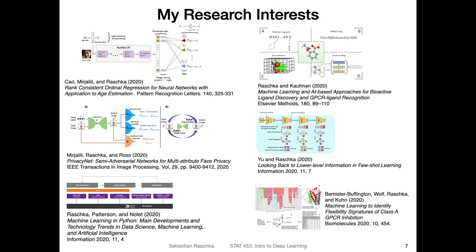Last year I worked on rank-consistent ordinal regression networks — we call that method CORAL — which is for classification of ordinal inputs. So if you have class labels that are ordered and you want to predict the right order of labels and their associated numeric values, we developed networks for that, applied to age classification. We also worked on face privacy — we call this method PrivacyNet — where we can hide facial attributes such as age, gender, and race from input images to protect one's privacy.